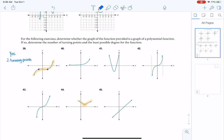That means if there are two turning points, then the degree was at least one higher. So if I have two turning points, that tells me my degree has to be greater than or equal to 3.